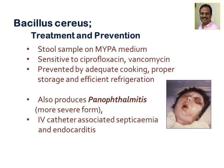For treatment, Bacillus cereus organisms are sensitive to ciprofloxacin and vancomycin. This type of infection is prevented by adequate cooking of food, proper storage, and efficient refrigeration. Refrigeration prevents bacterial growth and therefore toxin production — if toxin is not produced, the food is not infectious. Bacillus cereus also produces panophthalmitis, a severe form of eye infection, and causes IV catheter-associated septicemia and endocarditis.